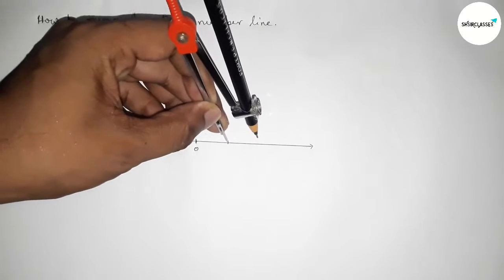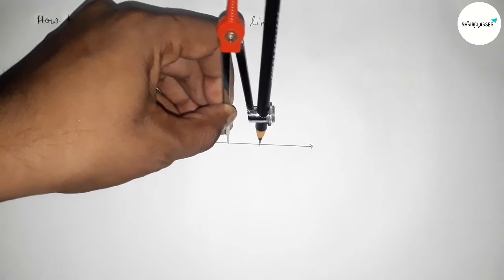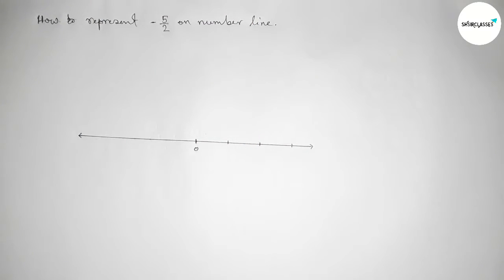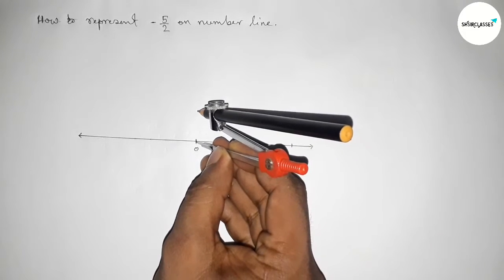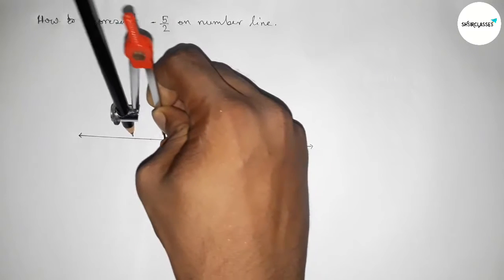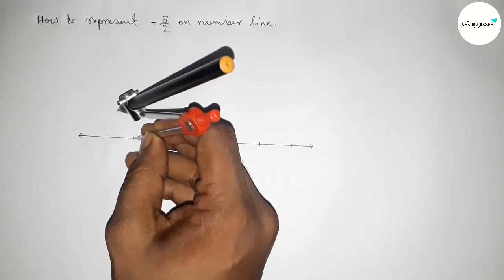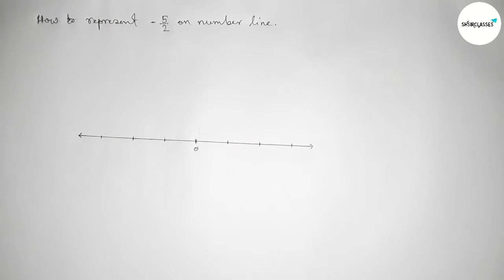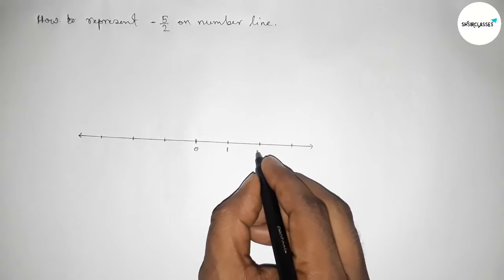So by this way we have to first mark the number on the line and then we can get a number line by this way. Now in this side we can take here one, two, three and continuous, and this side minus one, minus two, minus three and continuous.